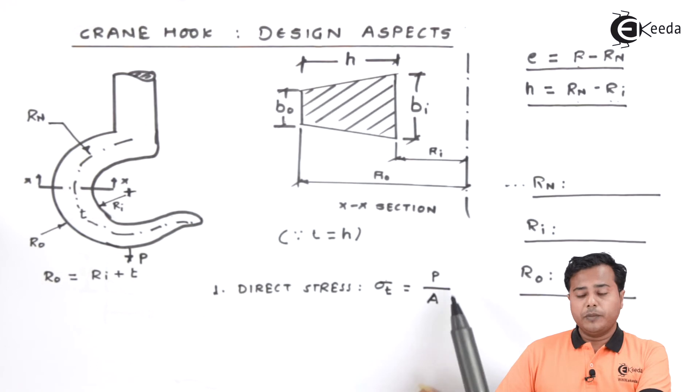So direct stress will be given by force divided by area where this area is nothing but the cross section area of this particular crane hook.